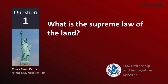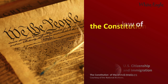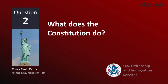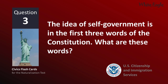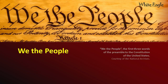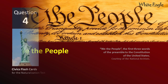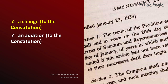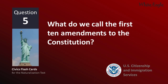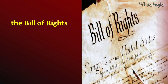What is the Supreme Law of the Land? The Constitution. What does the Constitution do? It protects basic rights of Americans. The idea of self-government is in the first three words of the Constitution. What are these words? We the people. What is an amendment? A change to the Constitution. What do we call the first ten amendments to the Constitution? The Bill of Rights.